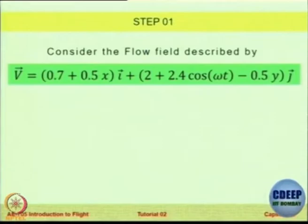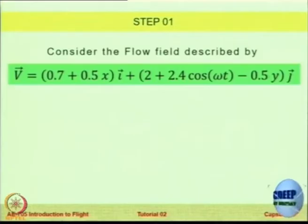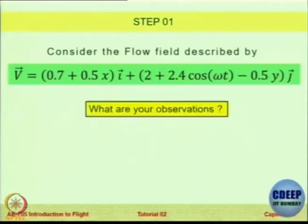This is a theoretical flow field defined by velocity equal to something i plus something j. Is it 1D, 2D or 3D? It is two-dimensional because there is no Z term. Let us see what your observations are based on this particular statement: when the value of velocity is a function of x — where t is time — is this flow uniform or non-uniform? There are three questions you will have to answer.